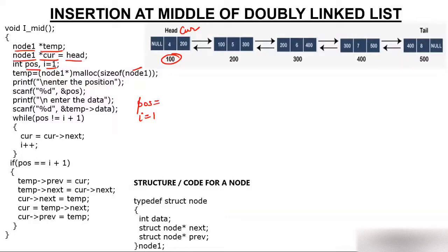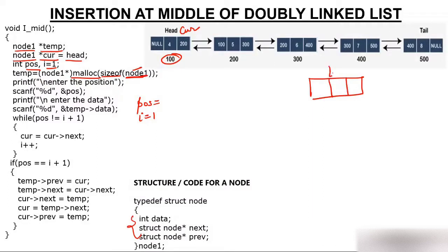If you want to insert a node, you have to create a node first. Using malloc, we allocate memory of size sizeof(node1), which has 3 parts: data and two addresses. A new node gets created — suppose we want to insert at the 4th position, and this new node's address is 600. Its pointer name is temp.